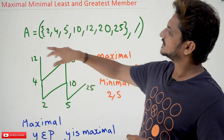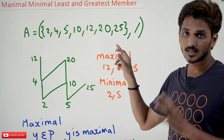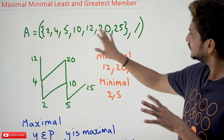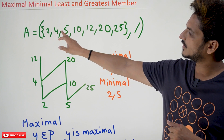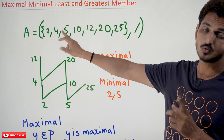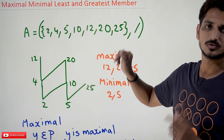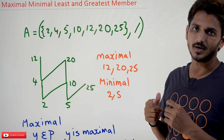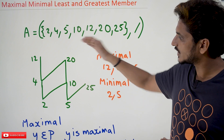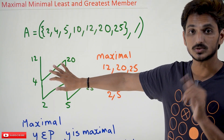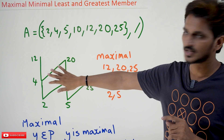Coming to today's class, let's take a set A = {2, 4, 5, 10, 12, 20, 25}. These are the set of elements. On this set, we have a relation 'divides' — for example, 2 divides 4, so (2, 4) is one ordered pair; 5 divides 10, so (5, 10) is one ordered pair. That is how our relation contains ordered pairs. On that relation, we are going to construct a Hasse Diagram, if it is a poset.